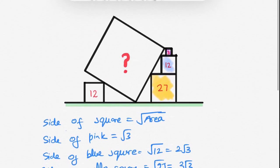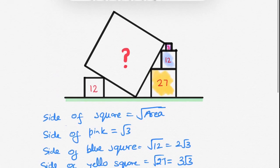Now mark this side on the figure. So, this is root 3, this is 2 root 3 and this is 3 root 3. Now, let me zoom this figure for the better explanation.